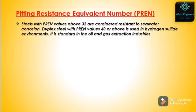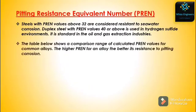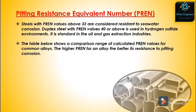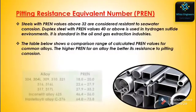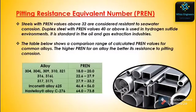Steels with PREN values above 32 are considered resistant to seawater corrosion. Duplex stainless steel with PREN values of 40 or above is used in hydrogen sulfide environments — it is a standard in the oil and gas extraction industries. The table below shows a comparison range of calculated PREN values for common alloys.